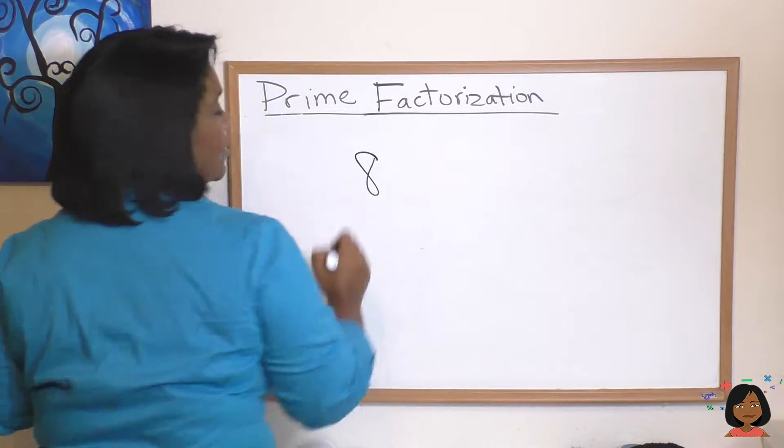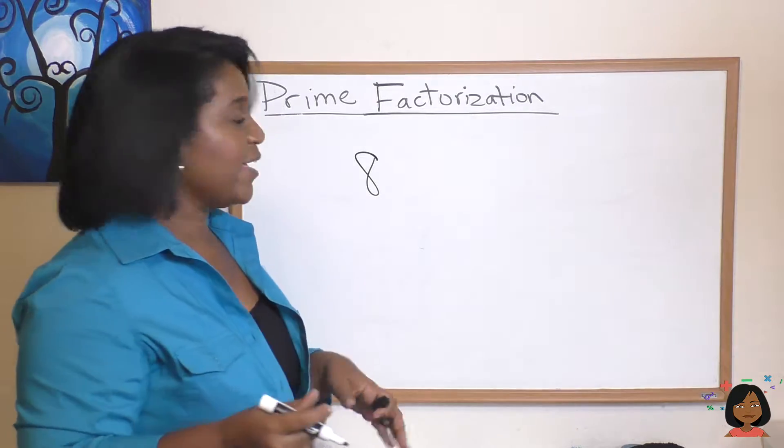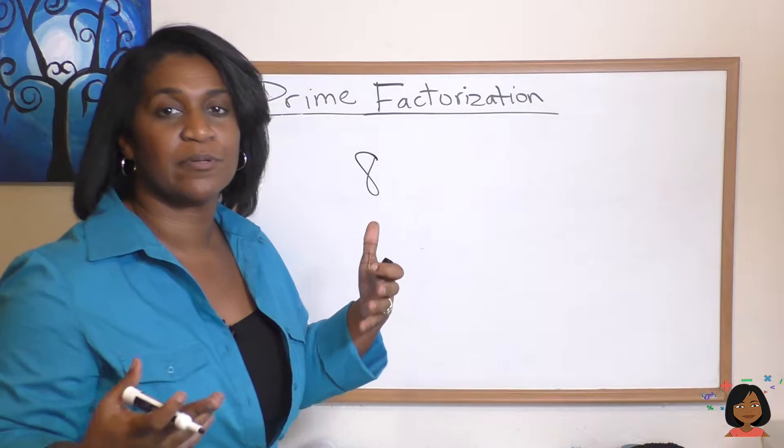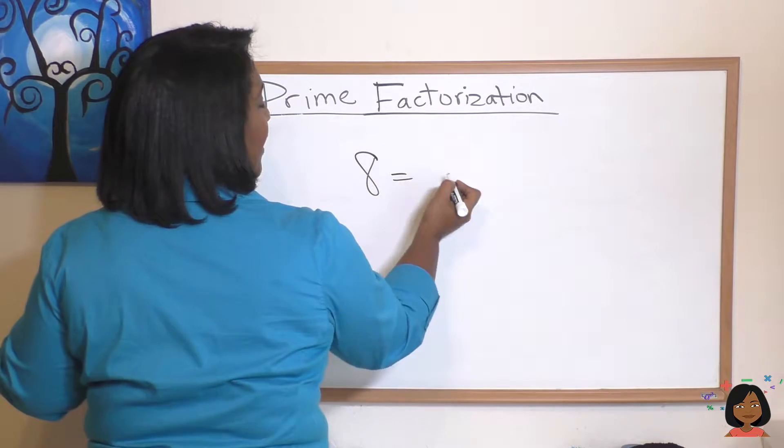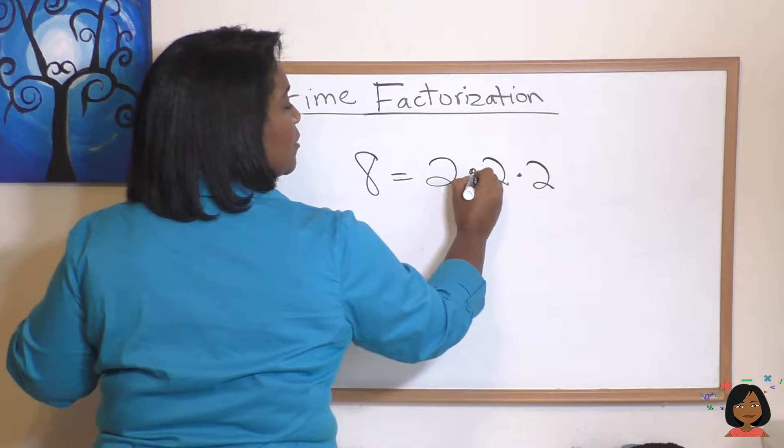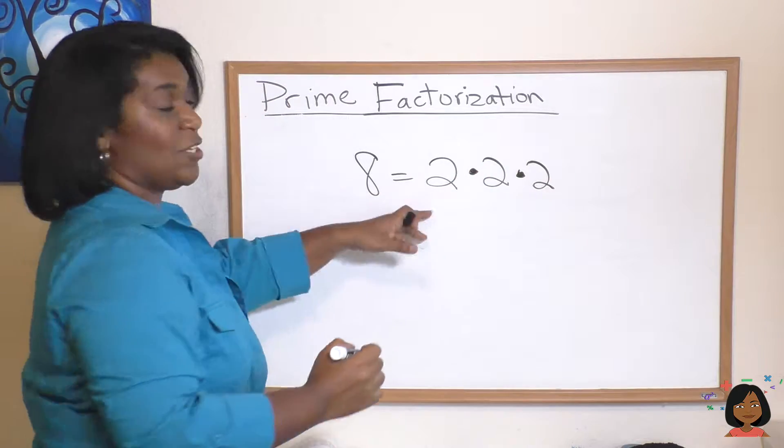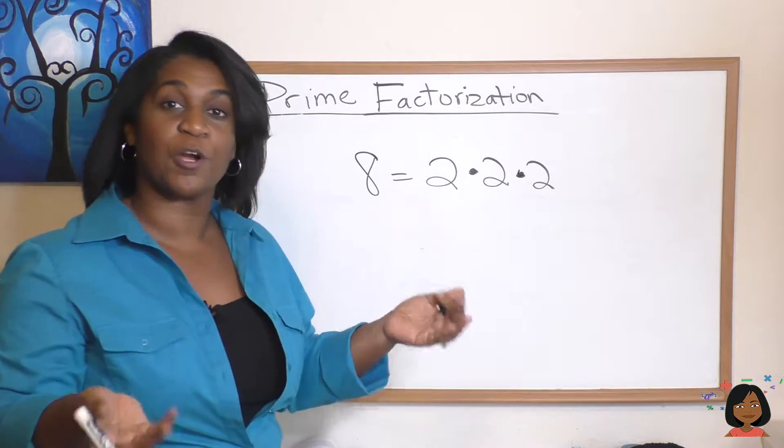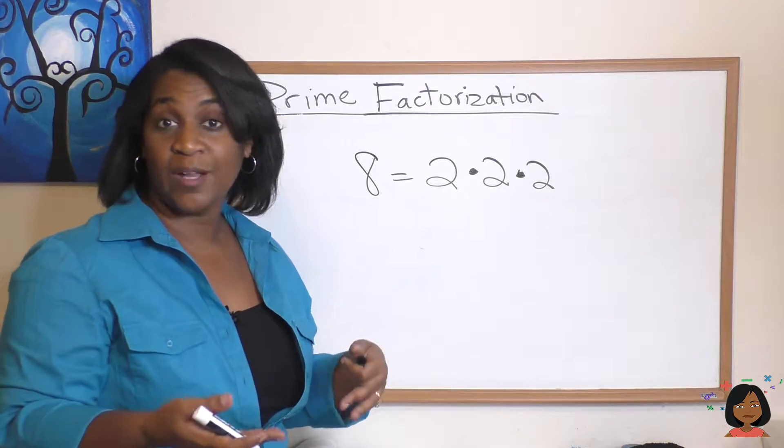Let's say I had the number eight. I can actually compose eight with other prime numbers. So eight is the same thing as saying two times two times two. Two times two is four. Four times two is eight and look at that my twos are prime numbers.